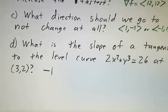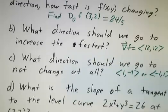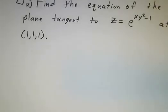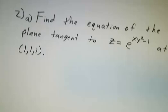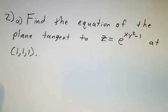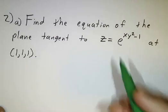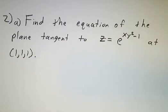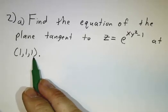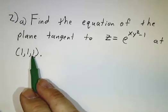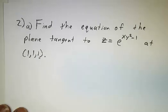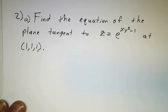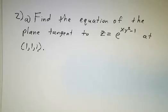That's it for these questions about directional derivatives. Now let's work a question about tangent planes. Suppose we have a surface z = e^(xy² - 1), and we're working at the point (1, 1, 1). We want to figure out the equation of the tangent plane.